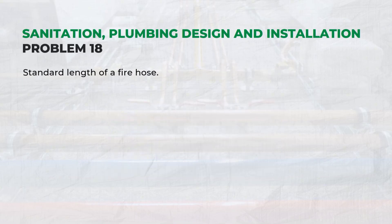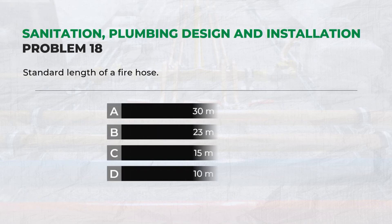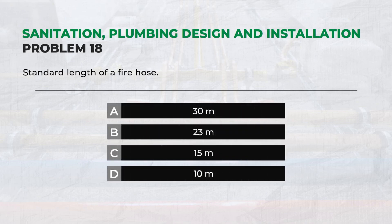What is the standard length of a fire hose? — Answer: B. 23 meters.